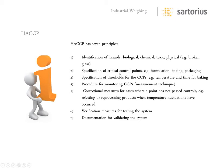Where are the control points — in formulation, baking, and packaging? What are the thresholds — for example, what's the safe temperature and time for baking? What are the procedures for monitoring these critical control points and what measurement technique is used? What are the correctional measures for cases where a point has not passed controls? What are the verification measurements and documentation for validating the system?